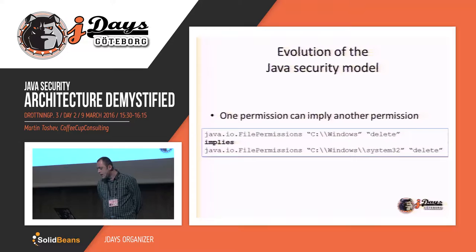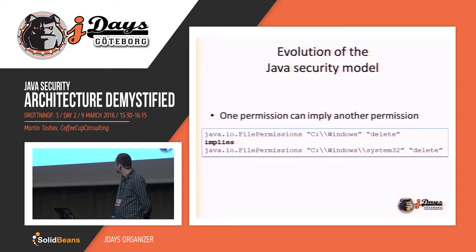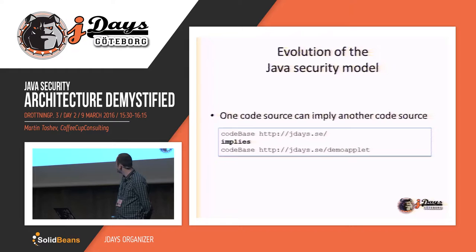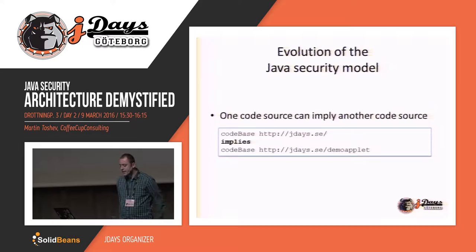Some interesting facts also apply in terms of permission checking. For example, if you provide one applet with the ability to delete the C:\Windows folder, this implies the permission to also delete the C:\Windows\System32 folder. So permissions can imply each other. Also, permissions code the location: if you specify permissions for applets loaded from jdays.se, this implies the same permissions for all applets loaded from jdays.se/demo-applet subdirectory. This provides a mechanism where the location of one applet implies the location of another.